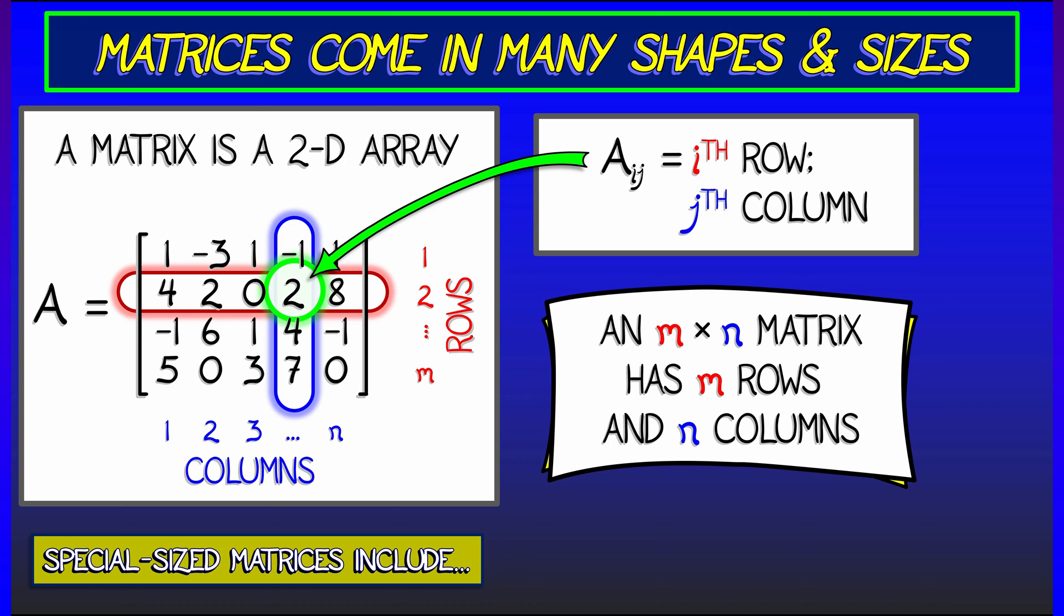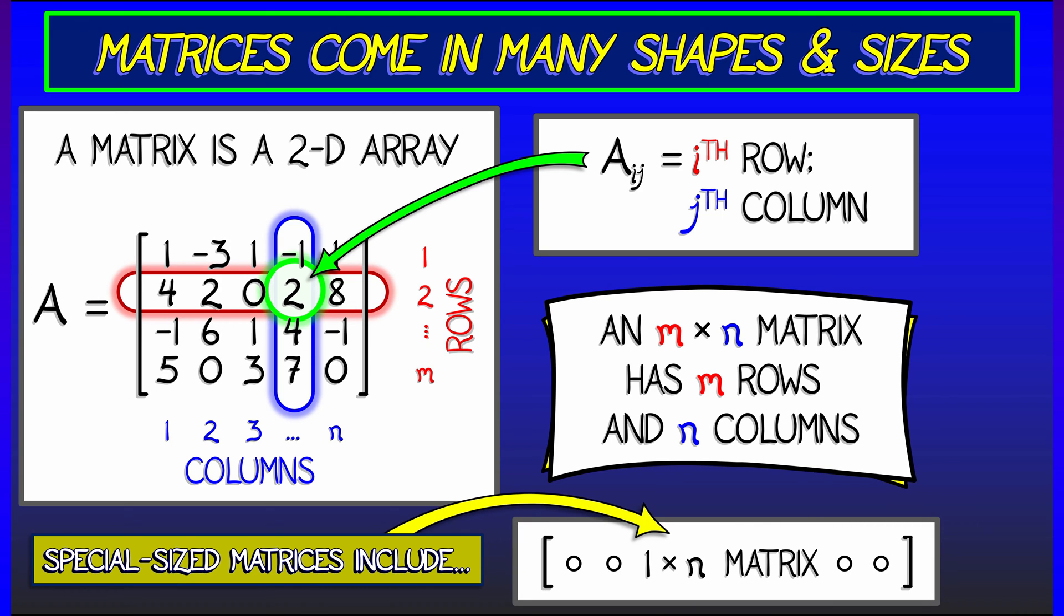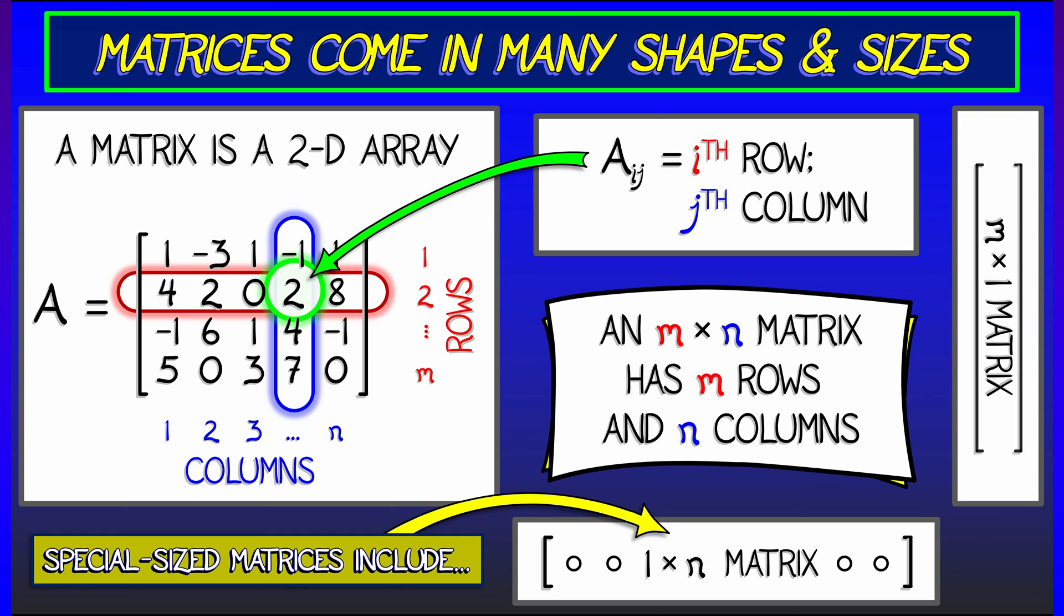or a 1 by n matrix, and a column matrix, or an m by 1 matrix. These are often conflated with vectors, row vectors, or column vectors.